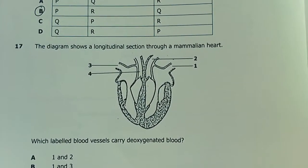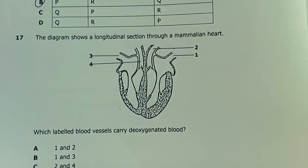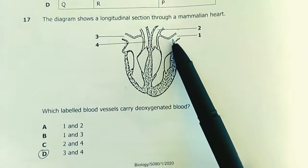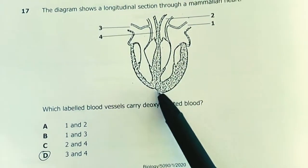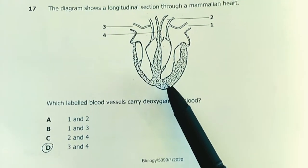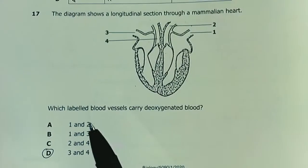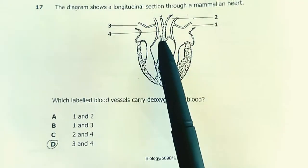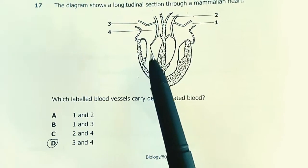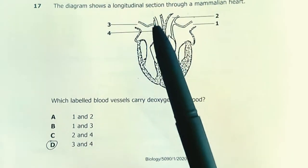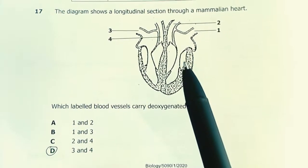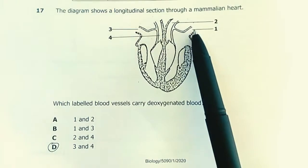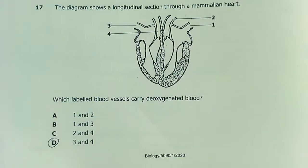Question 17. The diagram shows the longitudinal section through a mammalian heart. We've got the vena cava, pulmonary artery, aorta, then pulmonary vein. You can tell this muscle is bigger, that's the left side of the heart. It's bigger to pump blood to the rest of the body at high pressure. Which labelled blood vessel carries deoxygenated blood? It's 3 and 4. The right side carries deoxygenated blood. It pumps blood to the lungs for the blood to gain O2 and release CO2. This side carries oxygenated blood from the lungs via this vessel to the rest of the body. Our answer is D.